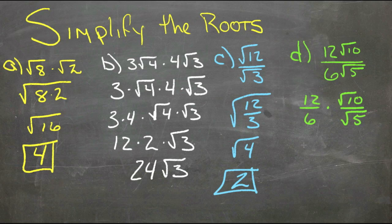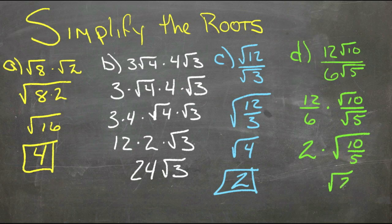12 over 6 is 2. Root 10 over root 5 could be root of 10 over 5. So that would be the root of 2. So that gives us 2 roots of 2.